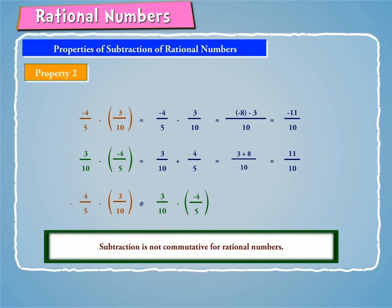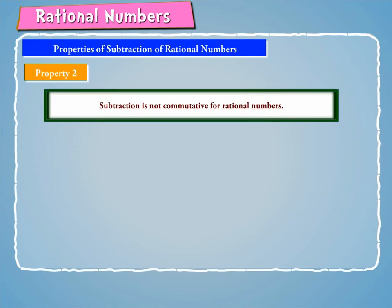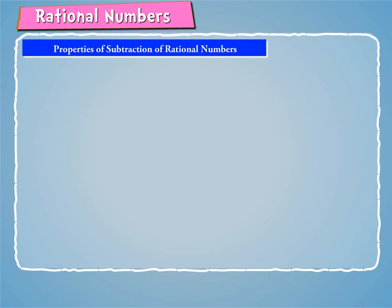Since −11/10 is not equal to 11/10, subtraction is not commutative for rational numbers. Hence, if a and b are two rational numbers, then a minus b is not equal to b minus a.